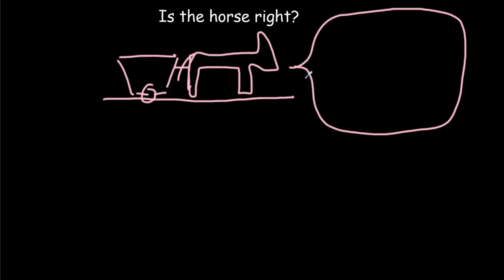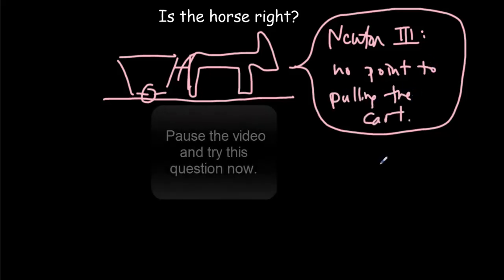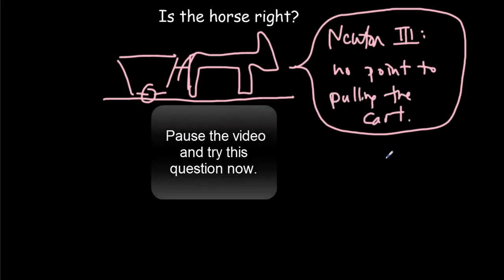He says, well, Newton's third law says that the force of me pulling on the cart will be equal and opposite to the force of the cart pulling on me. In other words, the harder I pull, the harder the cart pulls back. Therefore, there's no point in me even trying to pull the cart because we're not going to move. So he claims by Newton three that there's no point to pulling the cart. Is the horse right? Pause the video, try the question, come back for the answer.